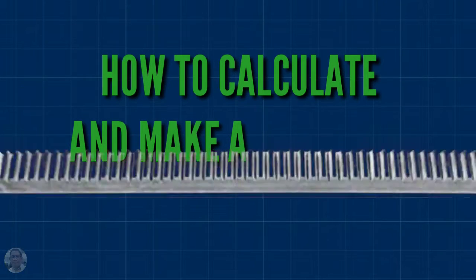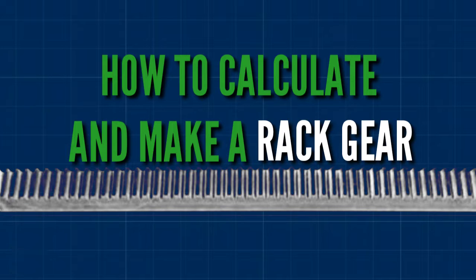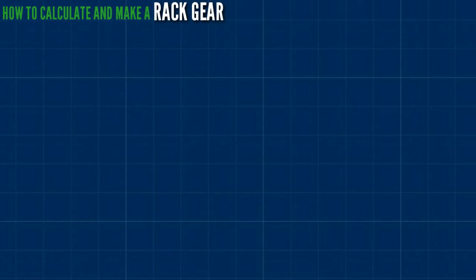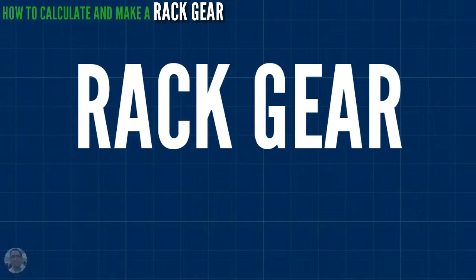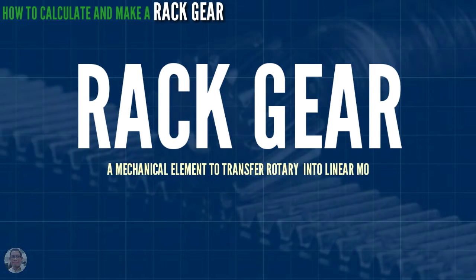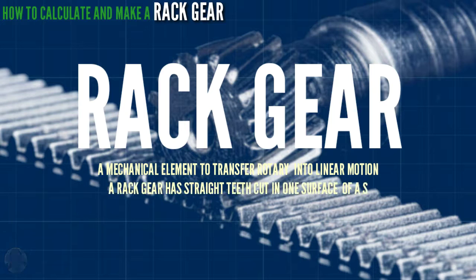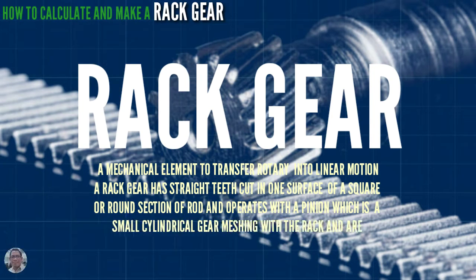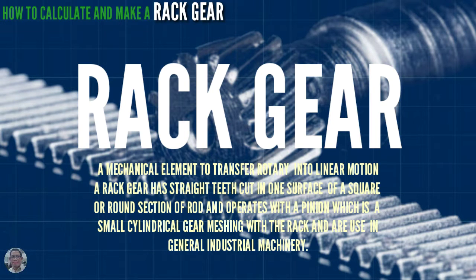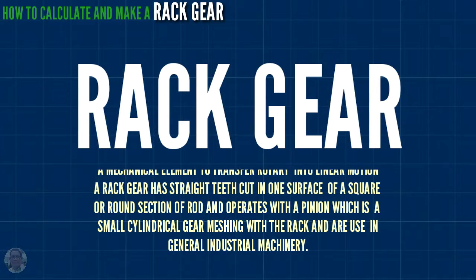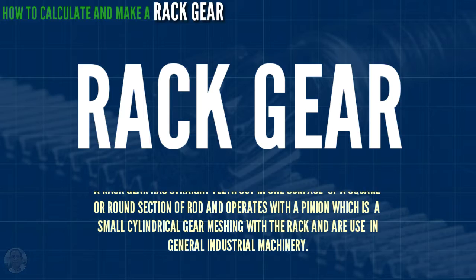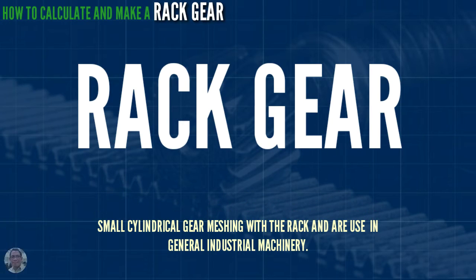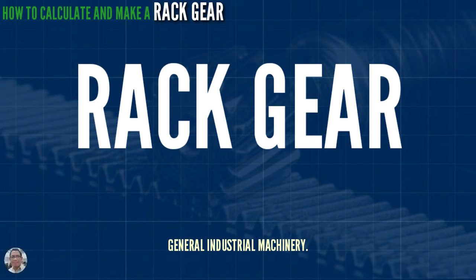In this video, you can learn how to calculate and make a rack gear. A rack gear is a mechanical element used to transfer rotary motion into linear motion. A rack gear has straight teeth cut in one surface of a square or round section of rod, and operates with a pinion, which is a small cylindrical gear meshing with the rack, and they are used in general industrial machinery.